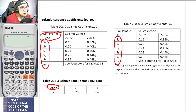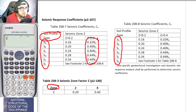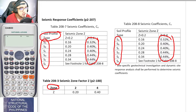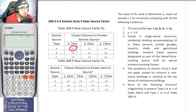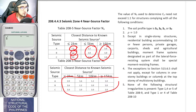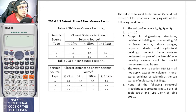For zone 4, the CA table shows values like 0.32 NA, where NA is the near source factor. The near source factor is found in tables 208-5 and 208-6 under section 208.4.4.3 for seismic zone 4. If the structure is in seismic zone 4, you must check these tables for the values of NA and NV, which depend on the closest distance to the nearest known seismic source or fault line.